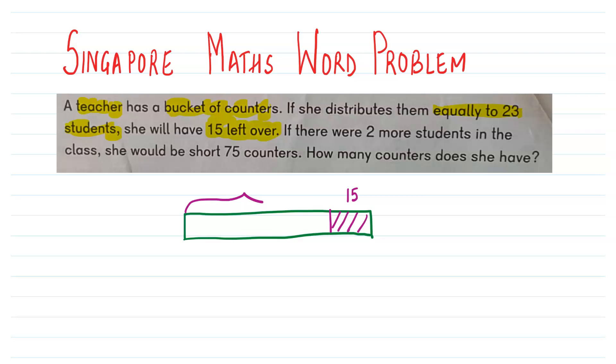So these many counters she distributed among—we don't know how many these are. She distributed these among 23 students. Each of them got equal number of counters.